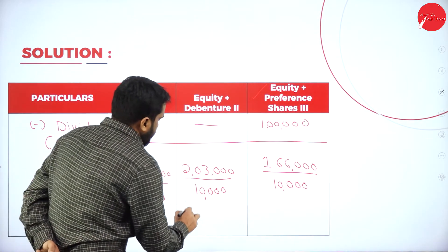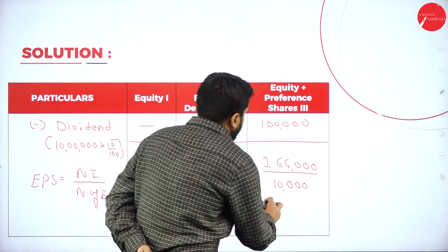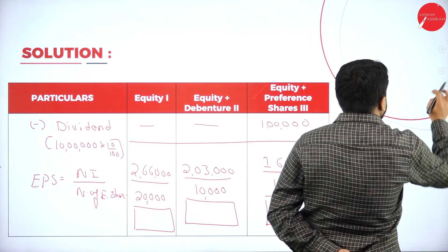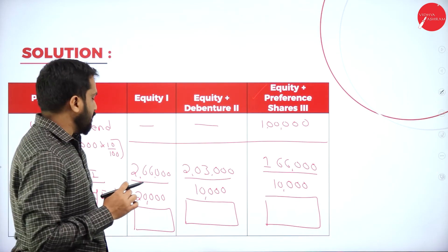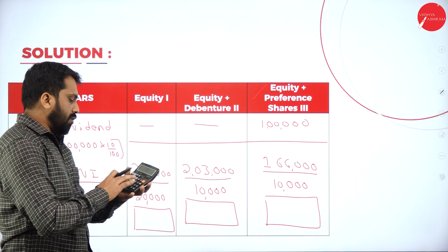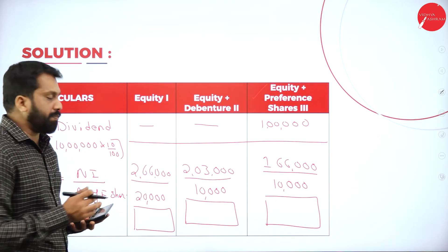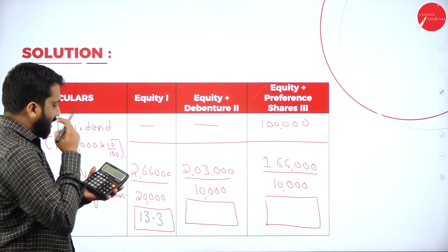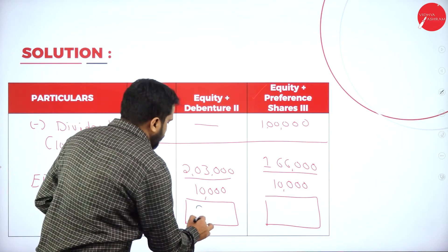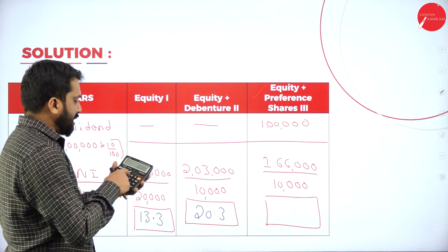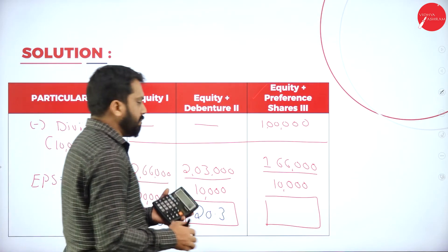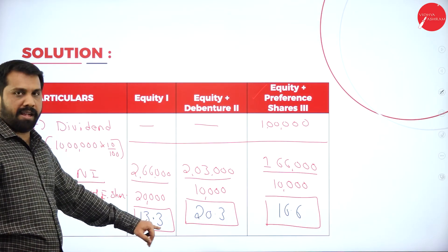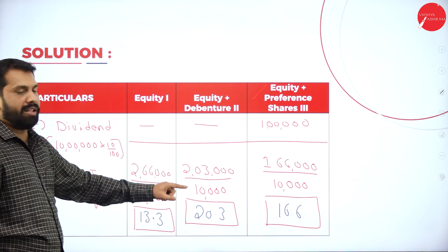Now calculate EPS. Alternative 1: 2,66,000 divided by 20,000 equals 13.3. Alternative 2: 2,03,000 divided by 10,000 equals 20.3. Alternative 3: 1,66,000 divided by 10,000 equals 16.6. So if you go for Option 1, EPS is 13.3; Option 2 gives 20.3; and Option 3 gives 16.6.